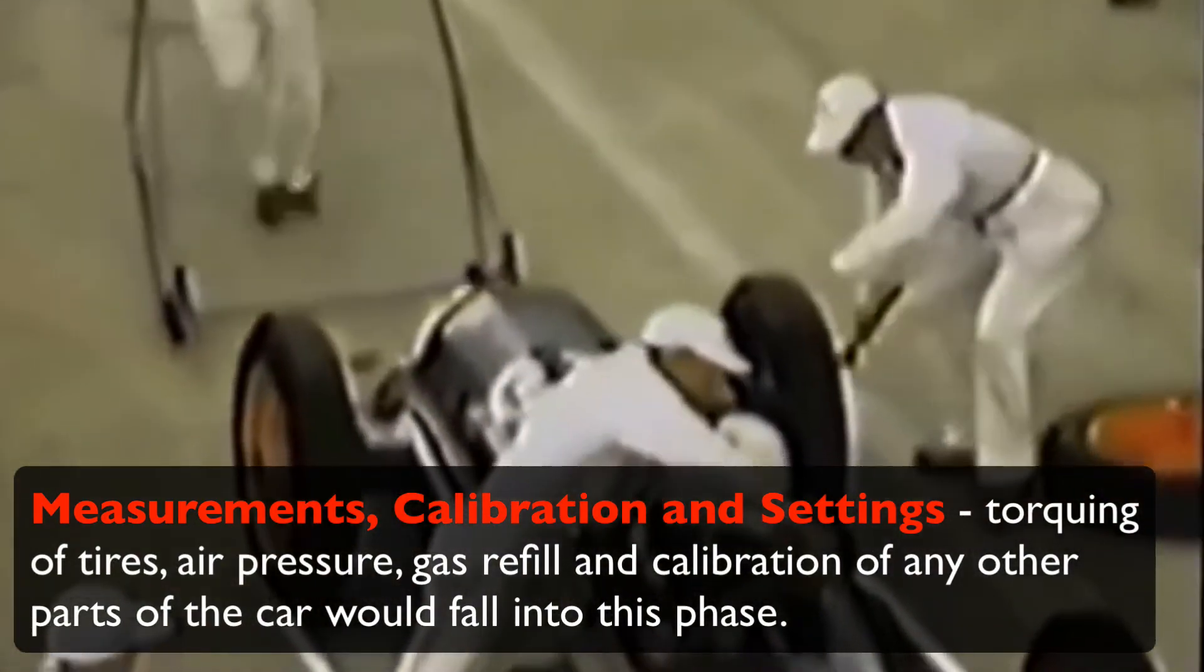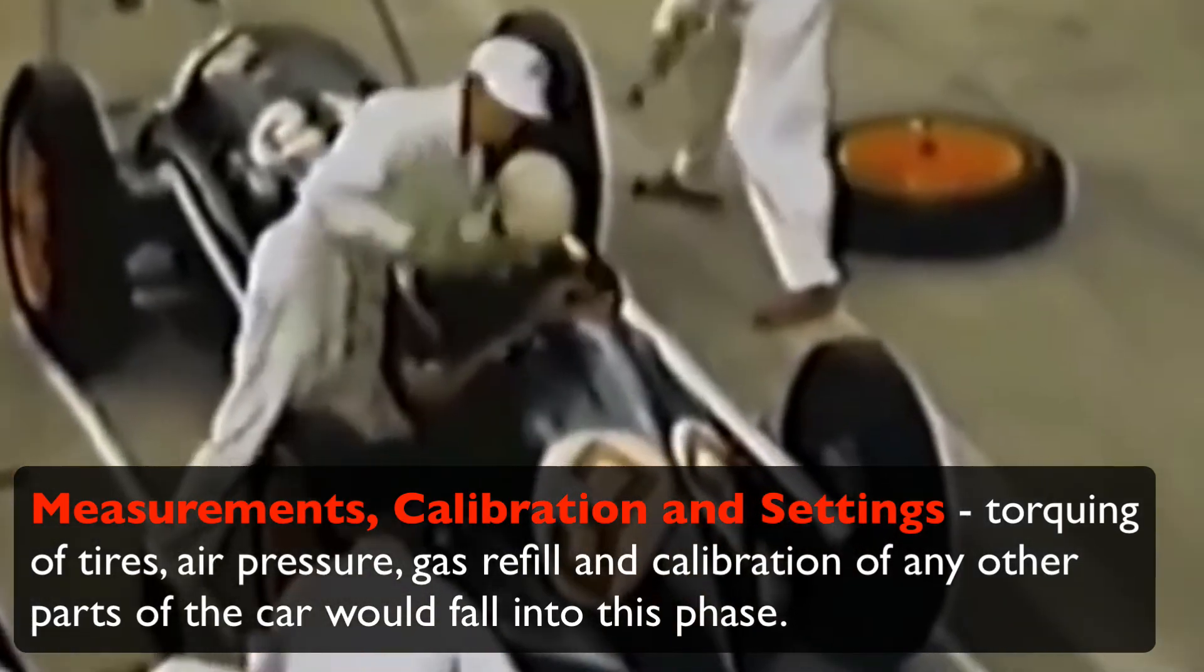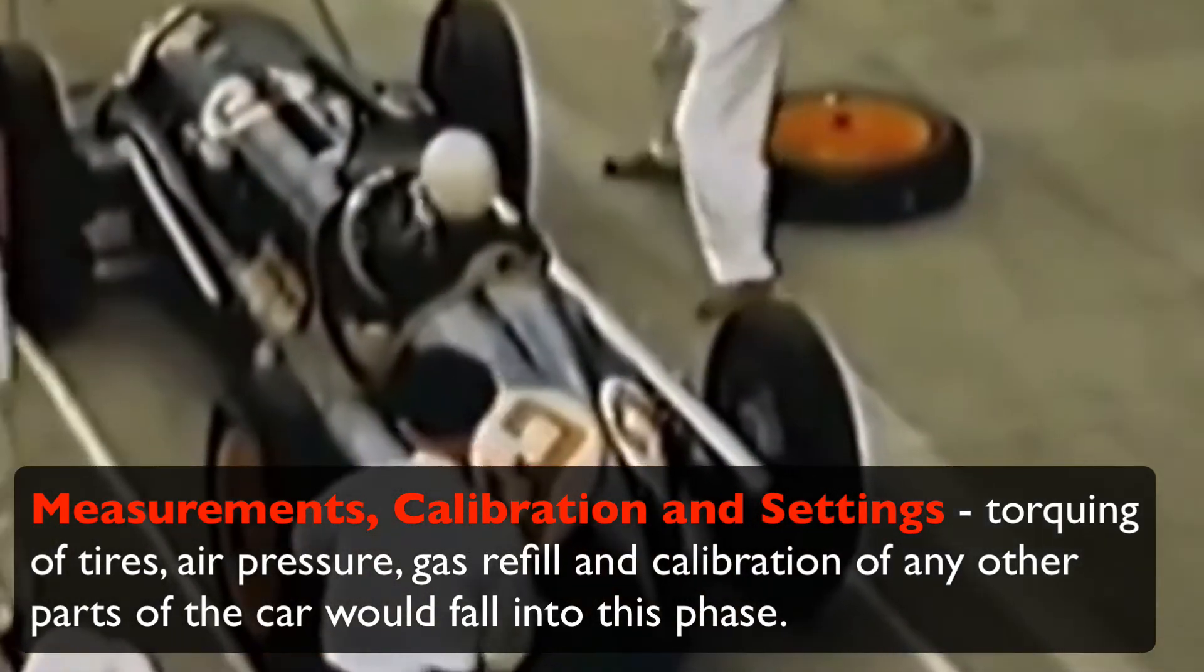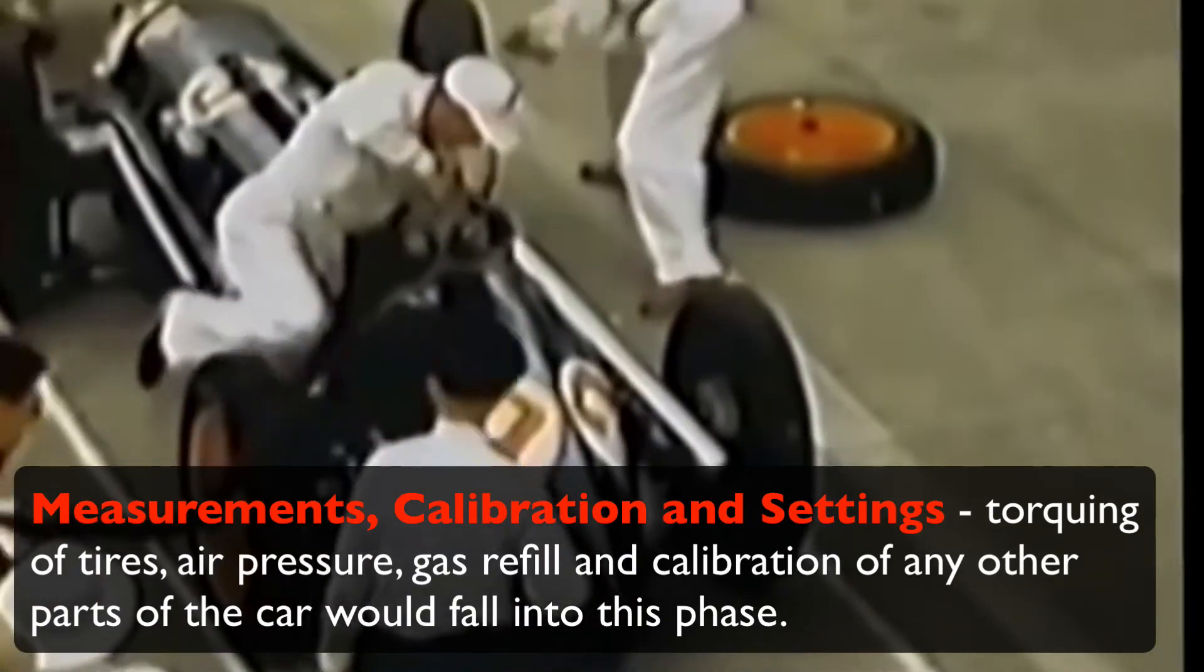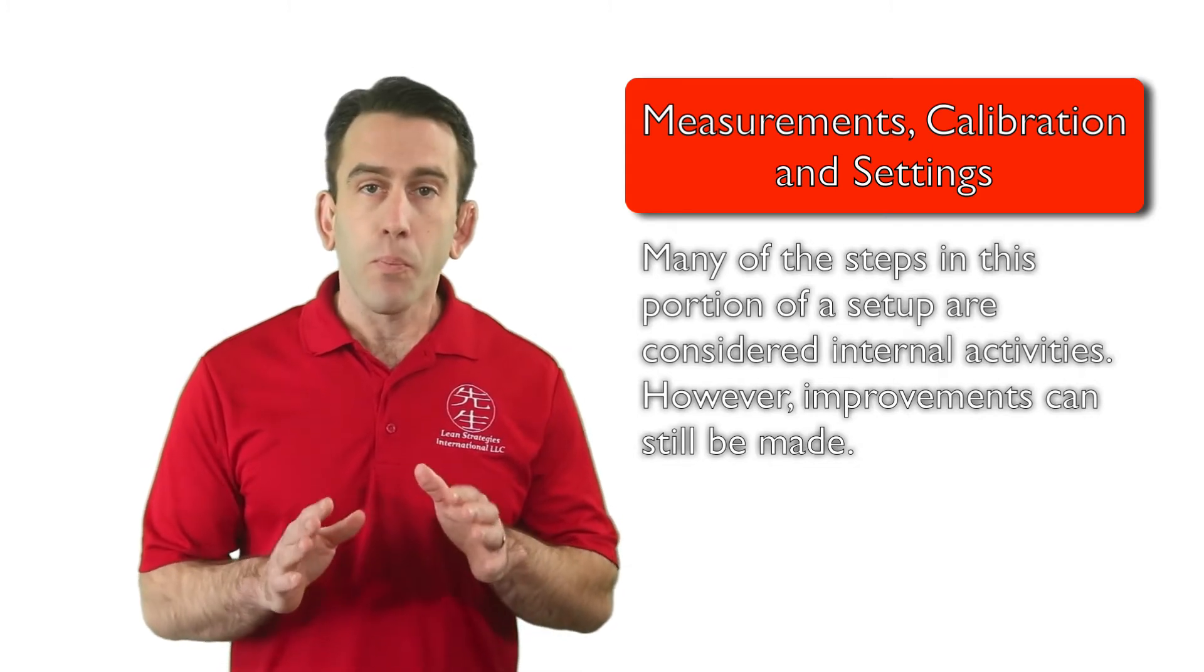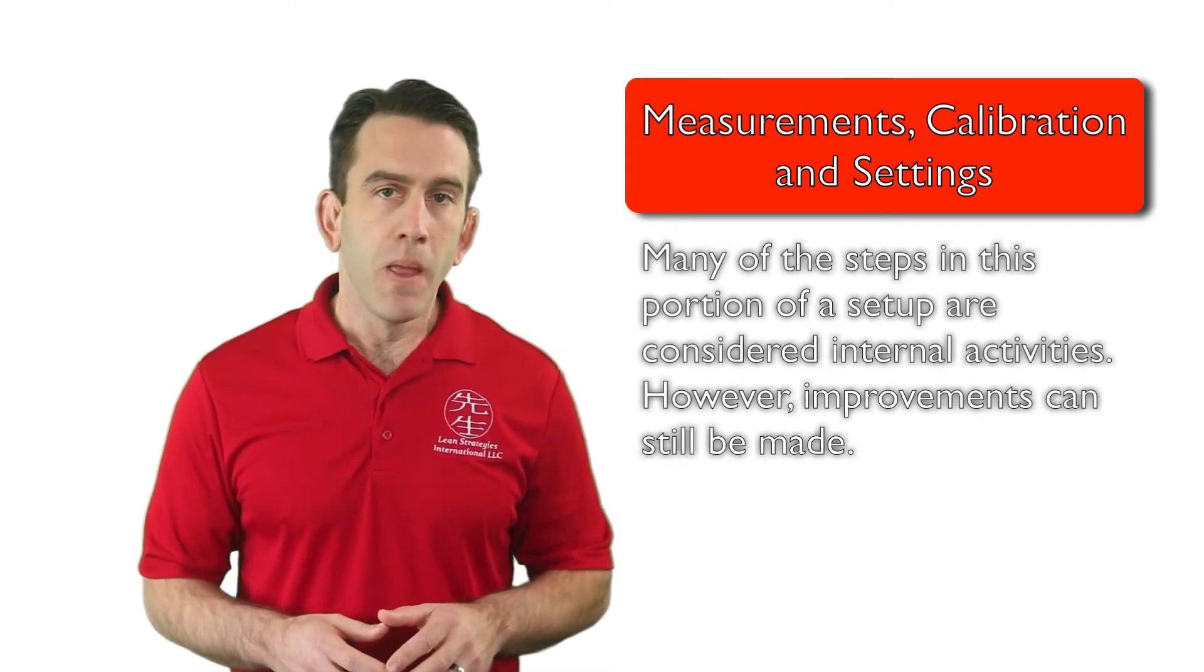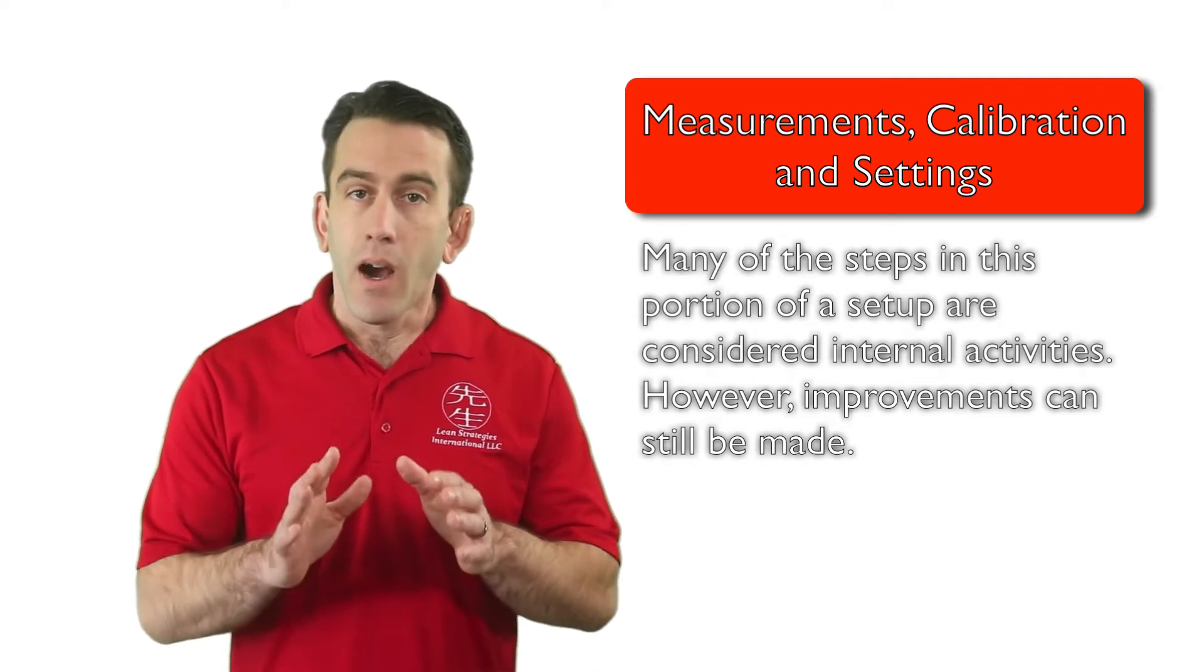If we look at this example of a pit stop on an Indy car, the torquing of tires, air pressure, gas refill, and calibration of any other parts of the car would fall into this phase. Something to keep in mind is that many of the steps which fall into this portion of a traditional setup are considered to be internal activities. However, improvements still can be made.